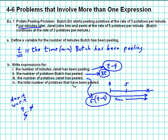Okay. The total number of potatoes that have been peeled. So if this is the number of potatoes that Butch has peeled at a certain point, at this point, how many potatoes have been peeled? Well, the number of potatoes peeled by Butch, which is 3t, plus the number of potatoes peeled by Janet, which is 5 times t minus 4. And so this is the total number of potatoes that have been peeled after Butch has been peeling for t minutes.